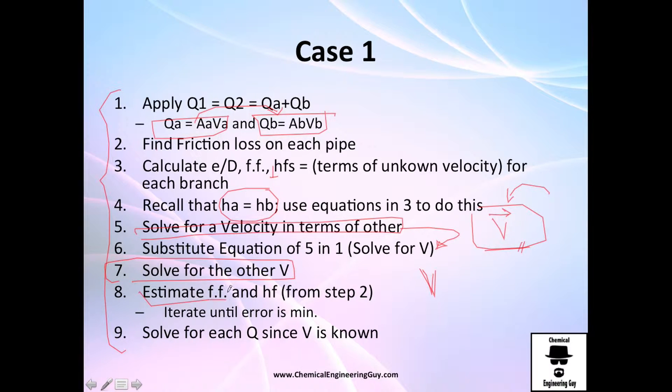We need to estimate the friction factor we assume right here with the Reynolds number, and so on. If the velocity we used applies, makes sense, and doesn't affect your Reynolds number and friction factor loss and so on, it's okay. If it does change, you need to find another value for velocity, and do all this once again, at least iteration, until the error is minimal.